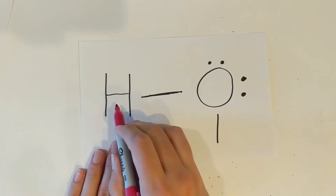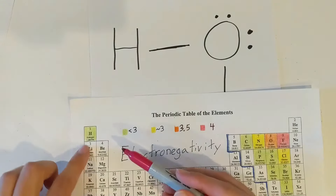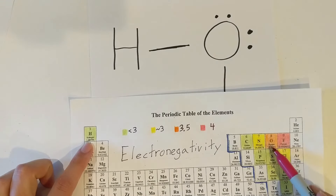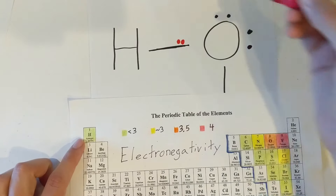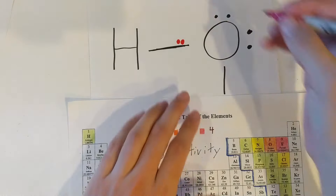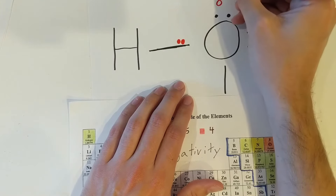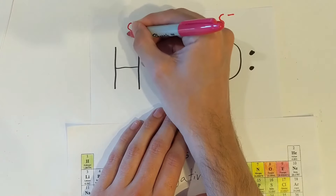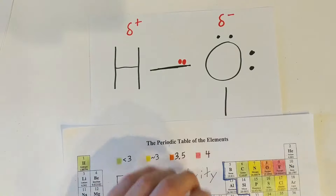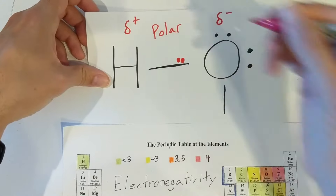Now let's look at hydrogen bonded with oxygen — will it be polar or nonpolar? Looking at electronegativities, hydrogen is less than three and oxygen is right around 3.5, so oxygen has a higher electronegativity. The electrons will be much closer to the oxygen side. Since electrons have a negative charge and they're closer to oxygen, that oxygen will be partially negative and hydrogen will be partially positive. So because we have those partial charges, it is a polar bond.